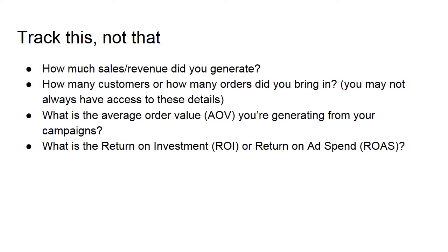Once you've started getting results from your campaigns, a savvy employer, business owner, or head of digital marketing is going to be focused on key performance indicators — or KPIs. The first KPI is how much sales or revenue did you generate from your campaigns. The second is how many customers or orders did you bring in. The next is what is the average order value, or AOV, you're generating. And finally, what is the return on investment — ROI — or return on ad spend — ROAS. These are really the main drivers of a profitable campaign.